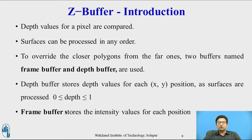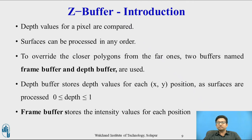Surfaces can be processed in any order. To override the closer polygon from the far one, two buffers are required: the frame buffer and the depth buffer. The depth buffer is used to store the depth of x, y pixel positions, where depth is greater than 0 and less than 1. Initially, all positions in the depth buffer are initialized to minimum depth, that is 0, representing the most distant depth from the view plane. The frame buffer stores the intensity value of each pixel position, and initially all positions are initialized to background intensity.